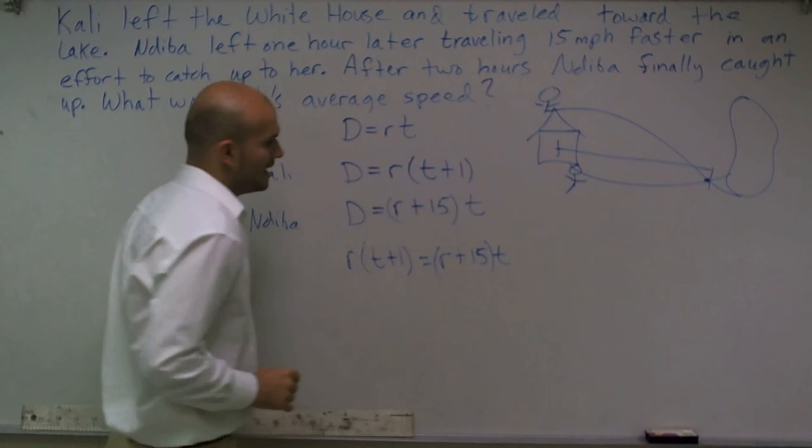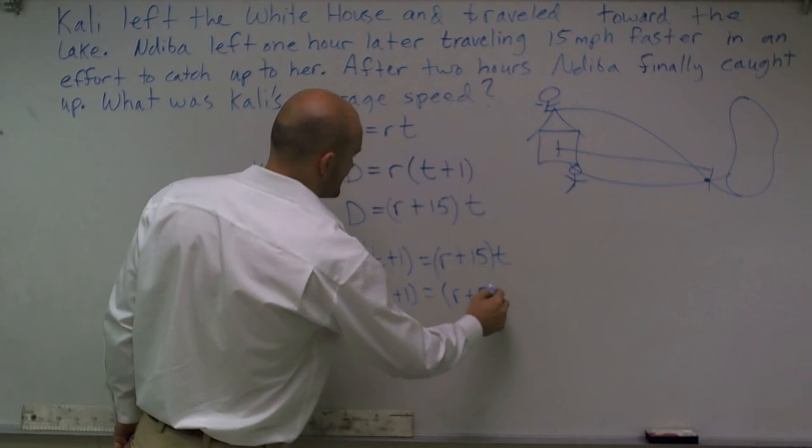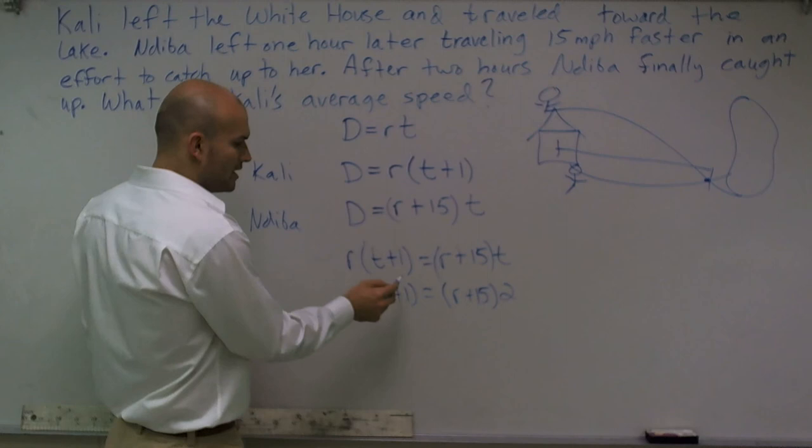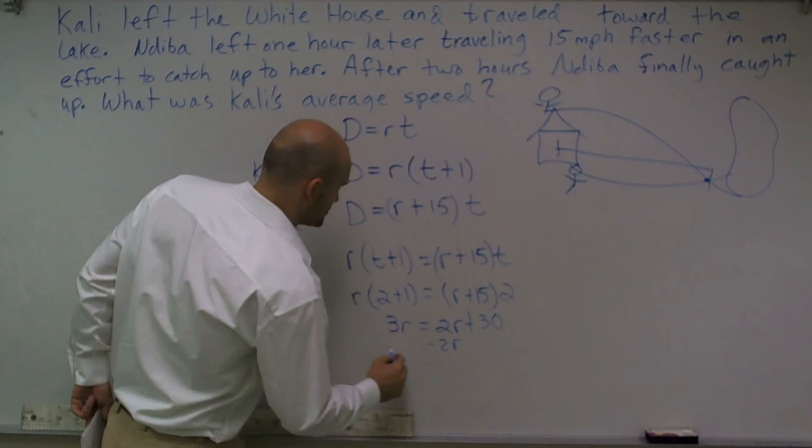And the next thing is say that is equal when T was equal to 2. So R times 2 plus 1 equals R plus 15 times 2. Now I can just do a little work: 2 plus 1 is 3, 3 times R is 3R, is equal to 2R plus 30.